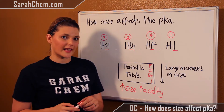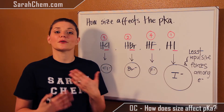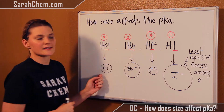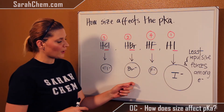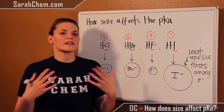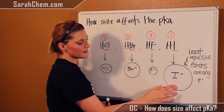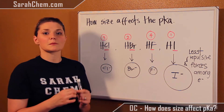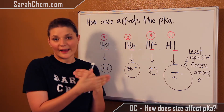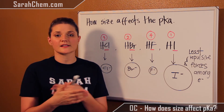Let's take a look at why that's the case. In order to understand how size affects the acidity of a compound, let's look at the conjugate bases of each one of our acids: Cl⁻, Br⁻, F⁻, and I⁻. I've drawn circles around them just to illustrate how their sizes vary. Iodine is the largest and fluorine is the smallest. What that negative charge means is that the atom is holding on to more electrons than it would in its neutral atomic state.